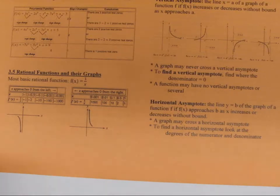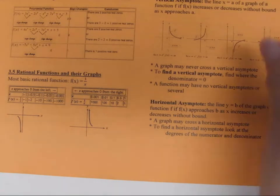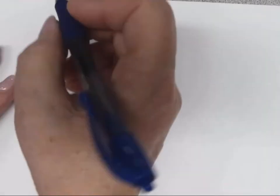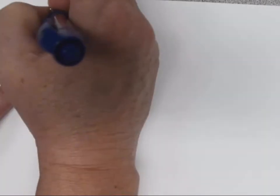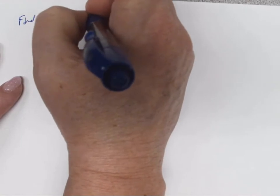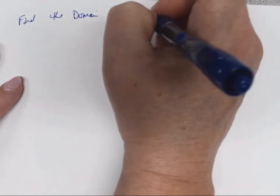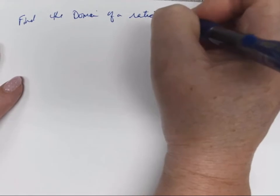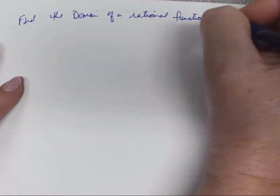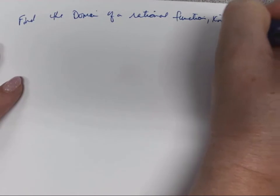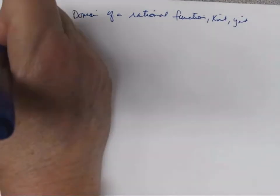We're going to talk about rational functions and their graphs. Let's look at a couple of basic examples and then come back to our handout. We want to find the domain of a rational function, and we want to find the x-intercept and the y-intercept. So let's look at Example 1.